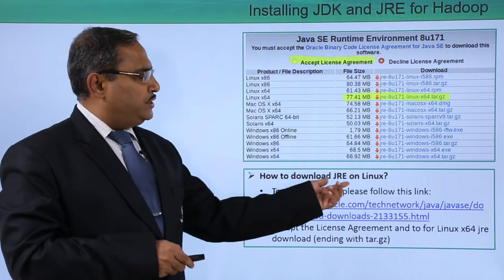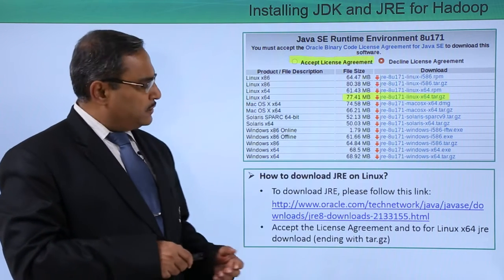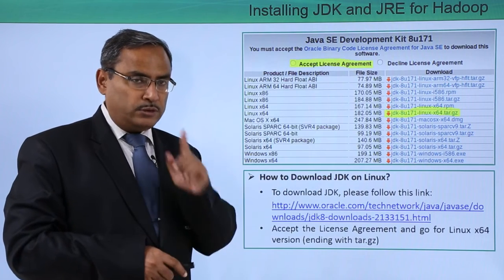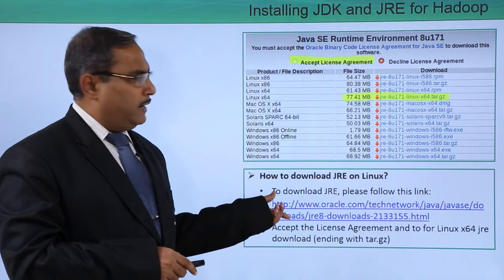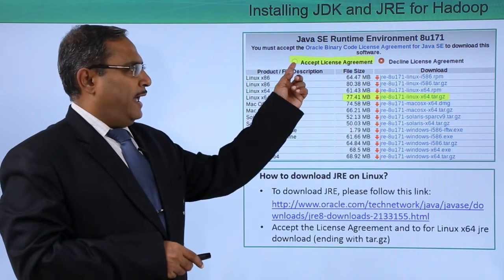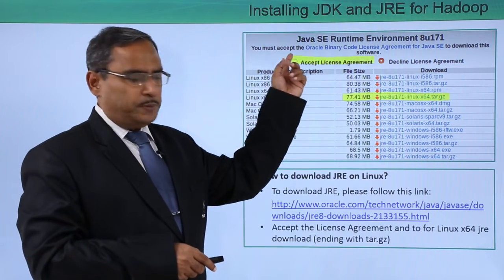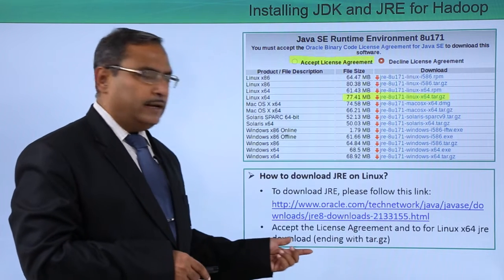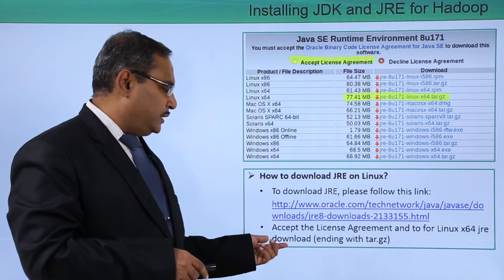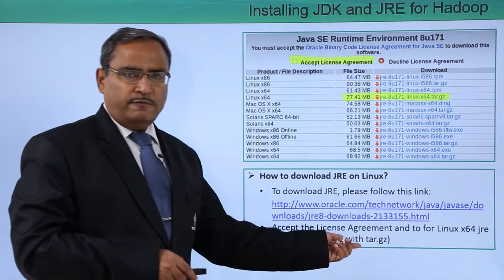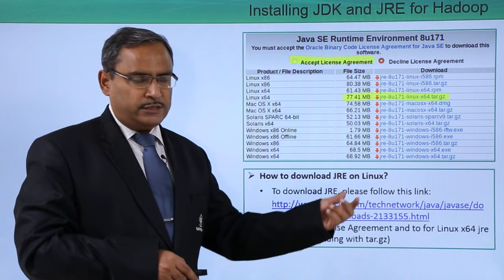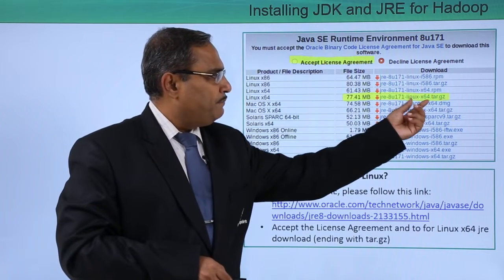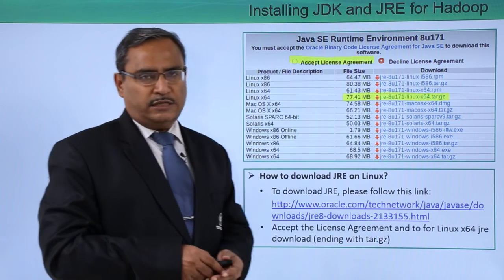How to download JRE on Linux? In the previous step we downloaded only the JDK, but now we are supposed to download the JRE as well. Go to the respective link, the page will come up, and 'Accept License Agreement' is to be selected. Then go to the Linux x64 JRE download, selecting the file ending with the extension tar.gz.